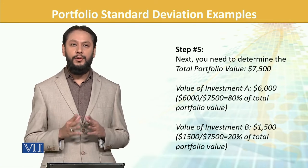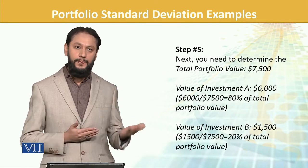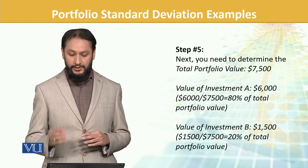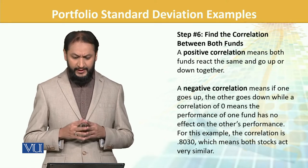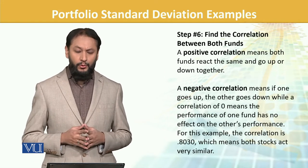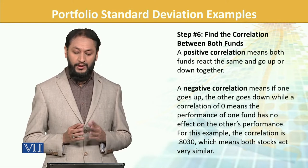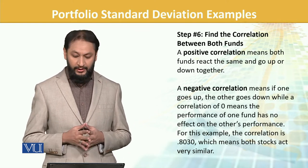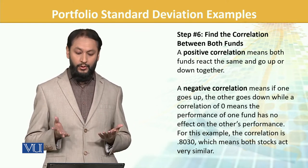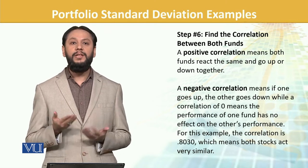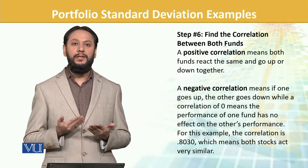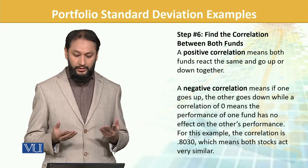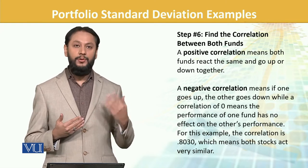Two components are now captured: weights and their individual standard deviations. Then find the correlation between both funds — what is the correlation between them? Positive correlation means both react in the same way; if one increases, the other also increases.